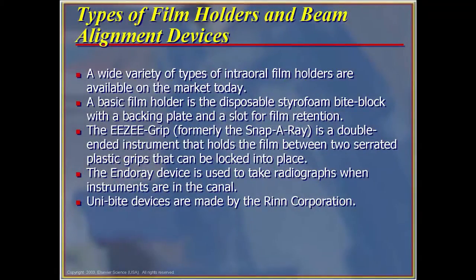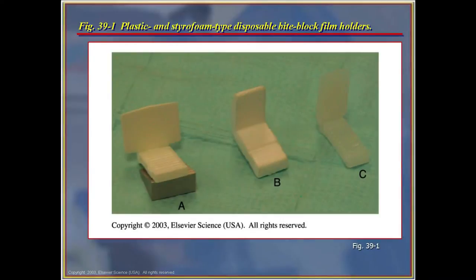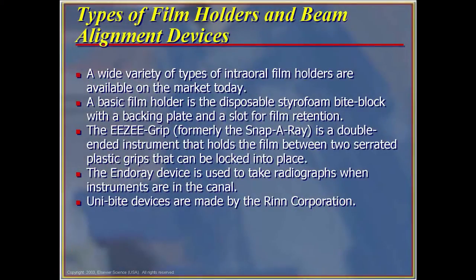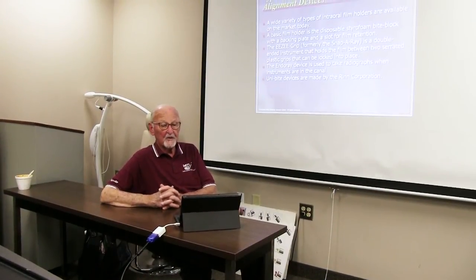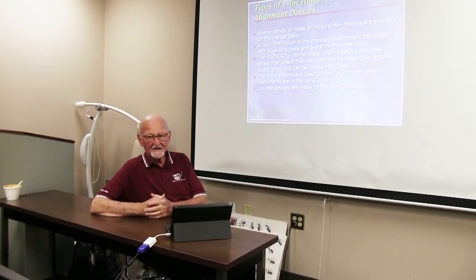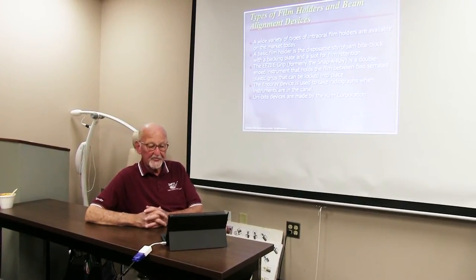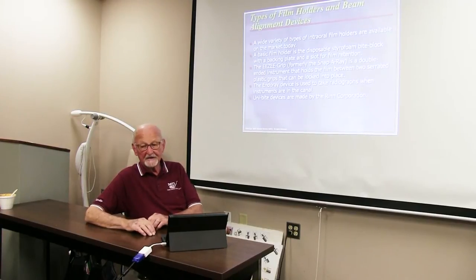Holders today must be used whenever taking radiographs in the dental environment. There are a wide variety of internal film holders available, and a basic film holder is the disposable styrofoam block, which can be used routinely for taking bite wings and also some of the periapicals. We have other holders used for taking individual procedures, including the endo-ray device when doing radiographs for endodontic procedures, and a variety of other uniblock devices. No longer can a patient hold the film with their finger in the mouth, which was common practice up until the late 70s, early 1980s. The exposure to the patient is grossly magnified, and it is no longer acceptable.